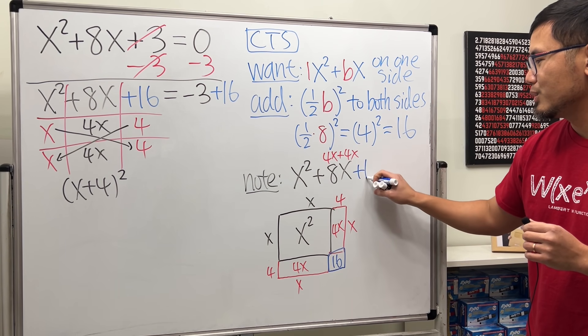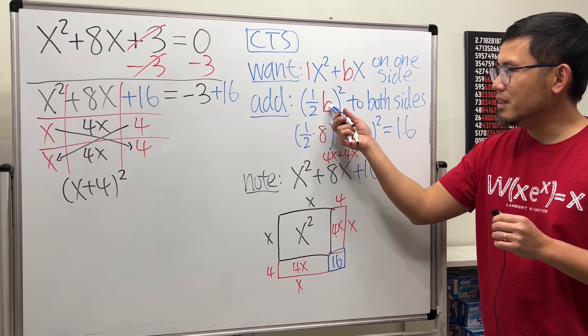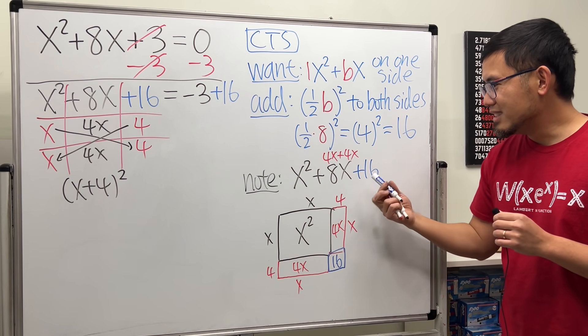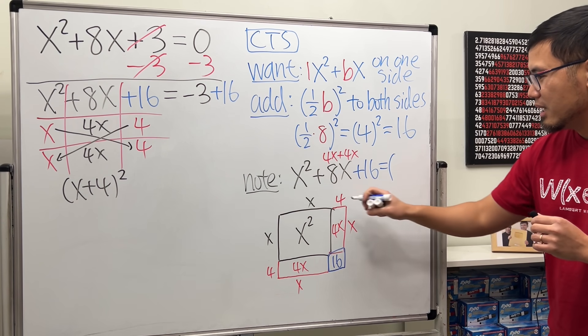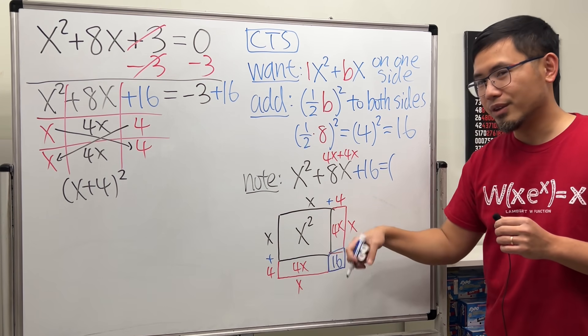And this is why we took half of b and then square, just like that. And if you have this expression you can just get x plus 4 times x plus 4 for the big picture, which is (x + 4)². Geometry and just algebra.